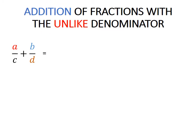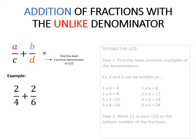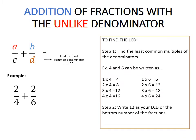Addition of fractions with unlike denominators. As you can see, you have A over C plus B over D — you have different denominators, C and D. So what we are going to do is find the least common denominator. Example: you have 2 over 4 plus 2 over 6. To find the LCD, you have to find the least common multiples of the denominators.